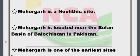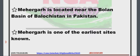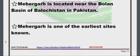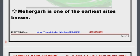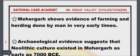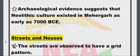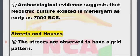Box information — Mehrgarh, the precursor to Indus Civilization: Mehrgarh is a Neolithic site located near the Bolan Basin of Balochistan in Pakistan. It is one of the earliest sites known and shows evidence of farming and herding by humans in very early times. Archaeological evidence suggests that Neolithic culture existed in Mehrgarh as early as 7000 BCE.